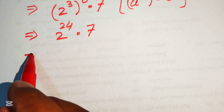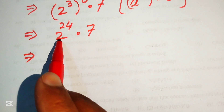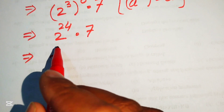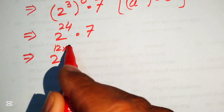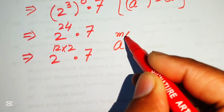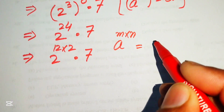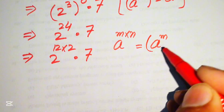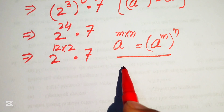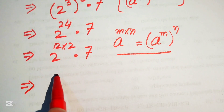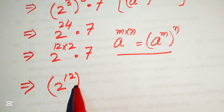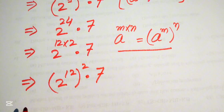We need further simplification. We write 24 as 12 times 2, so the term becomes 2 to the power of 12 times 2, multiplied by 7. Using the exponent law — a to the power of m times n equals a to the power of m to the power of n — we rewrite this as 2 to the power of 12, whole squared, multiplied by 7.